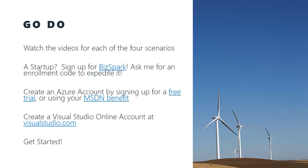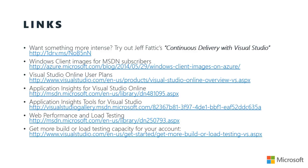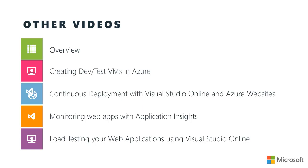Some go-dos: remember there are videos for each of the other four scenarios as well as an overview video, so feel free to go watch those. If you need MSDN and you don't have it, you may qualify as a startup in BizSpark — go to bizspark.com or follow up with me directly and I can help you get an enrollment code if you qualify. If you need an Azure account, you can create a free trial, or if you have an MSDN subscription, you can activate your Azure benefit. Make sure to sign up at visualstudio.com for a free Visual Studio Online account. If you grab a copy of the slides, there's a ton of links to a more in-depth walkthrough of continuous delivery with Visual Studio by my teammate Jeff Fatick, as well as links to resources around the content in this video series. The first video was an overview, the second looked at creating dev-test VMs in Azure, this video was on continuous deployment with Visual Studio Online and Azure websites, and there will be two subsequent videos on monitoring web apps with Application Insights and load testing your web apps using Visual Studio Online.